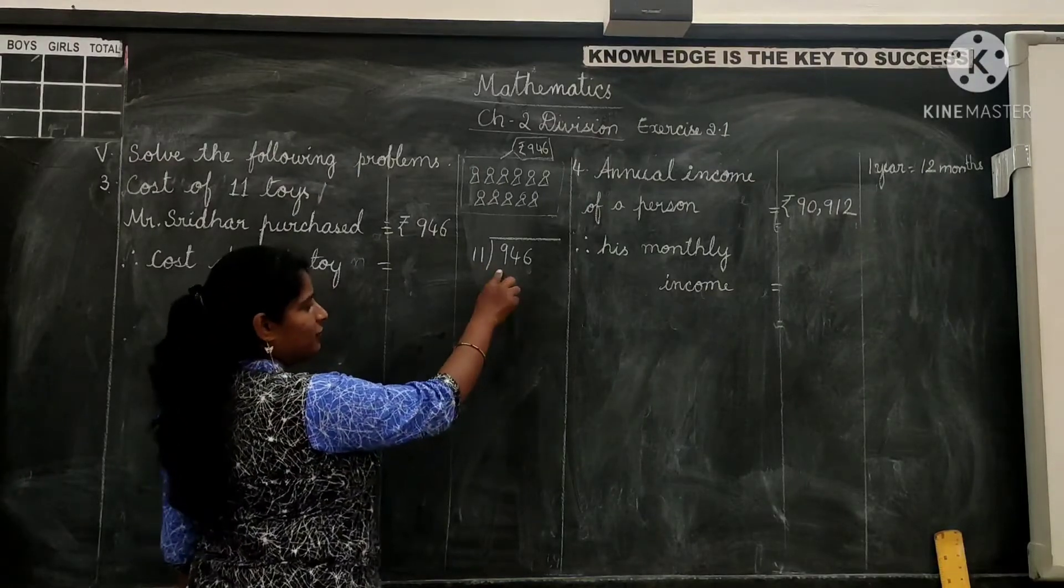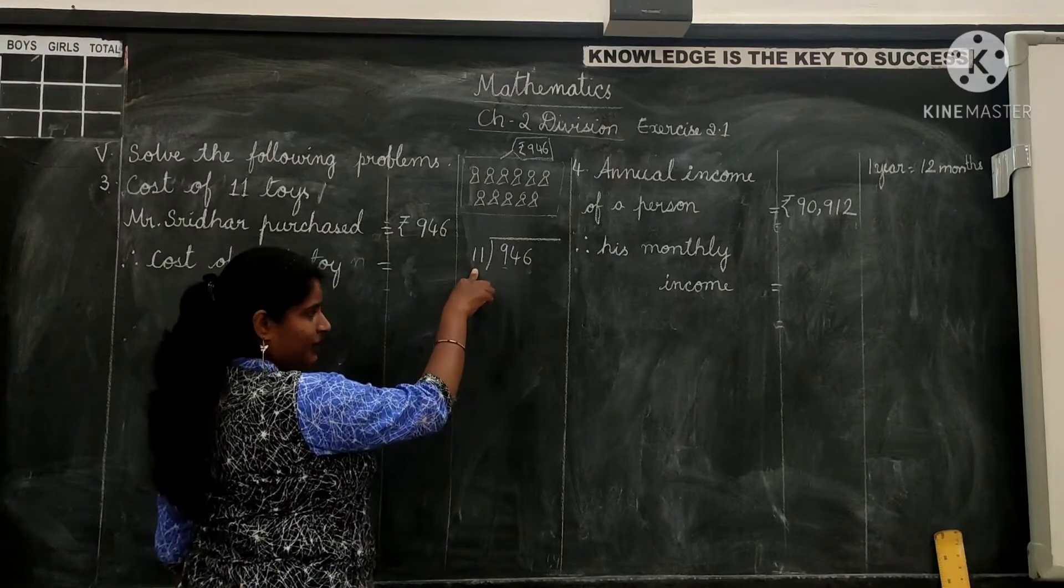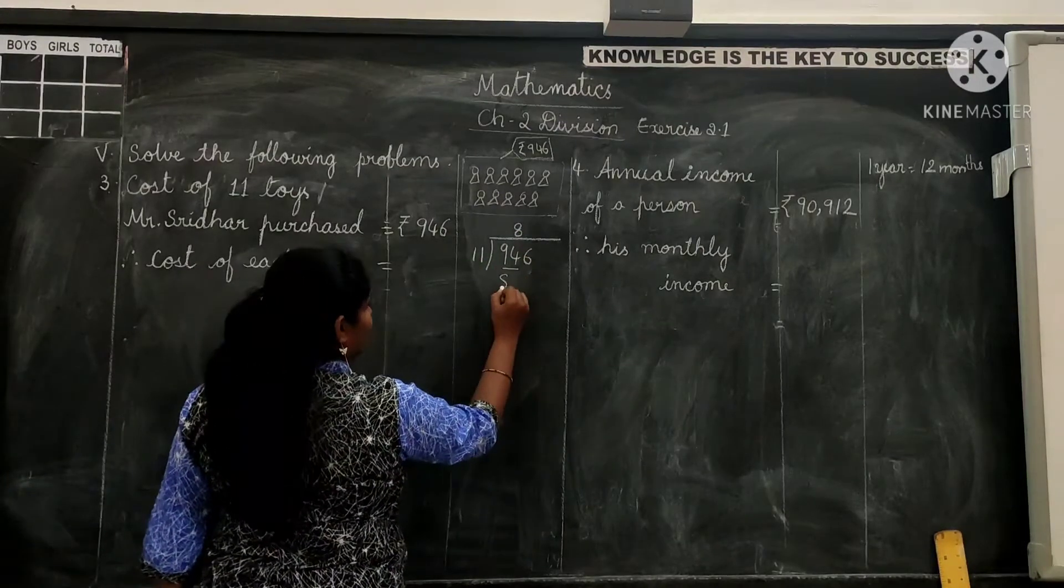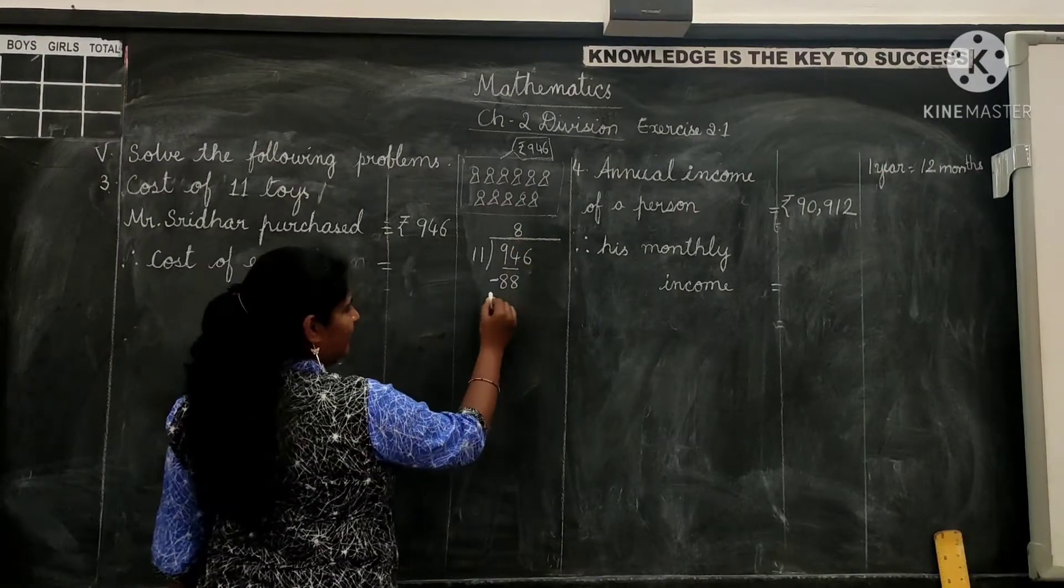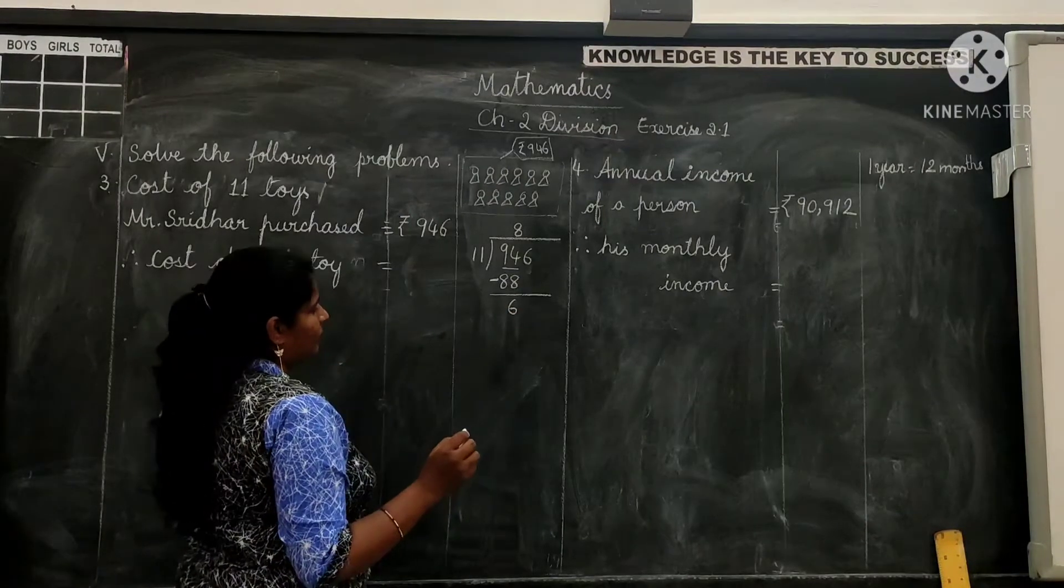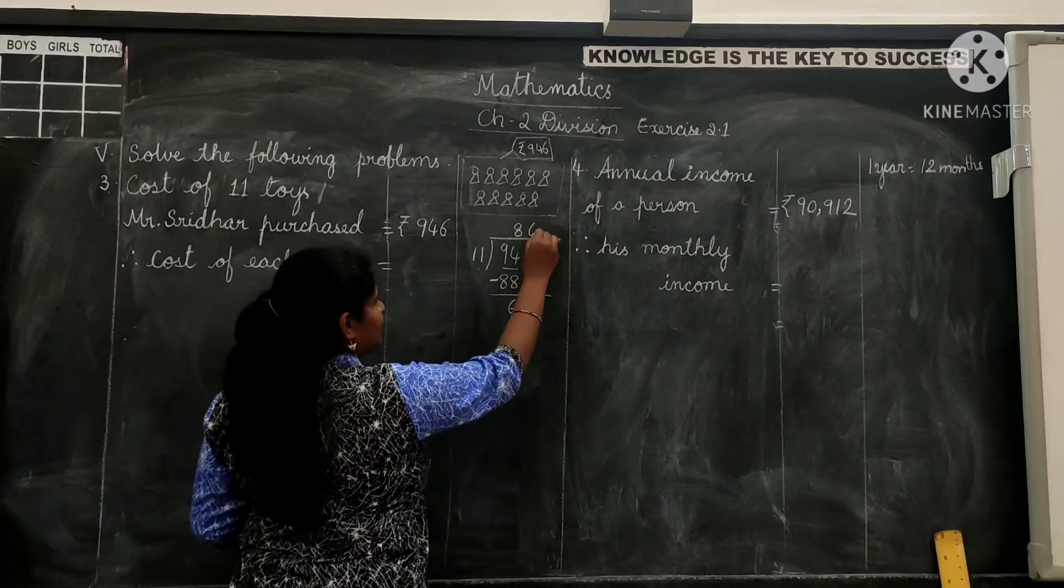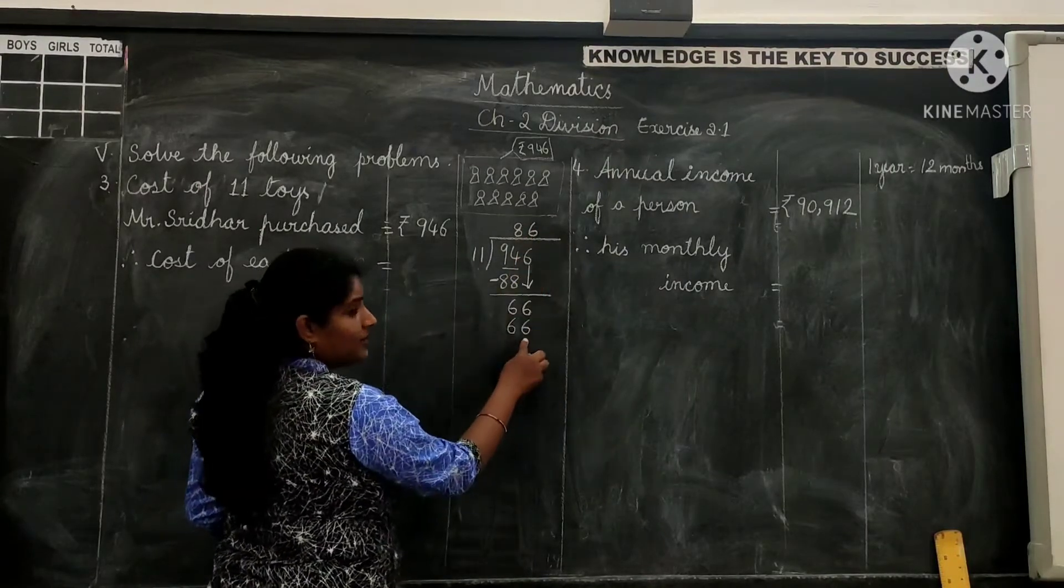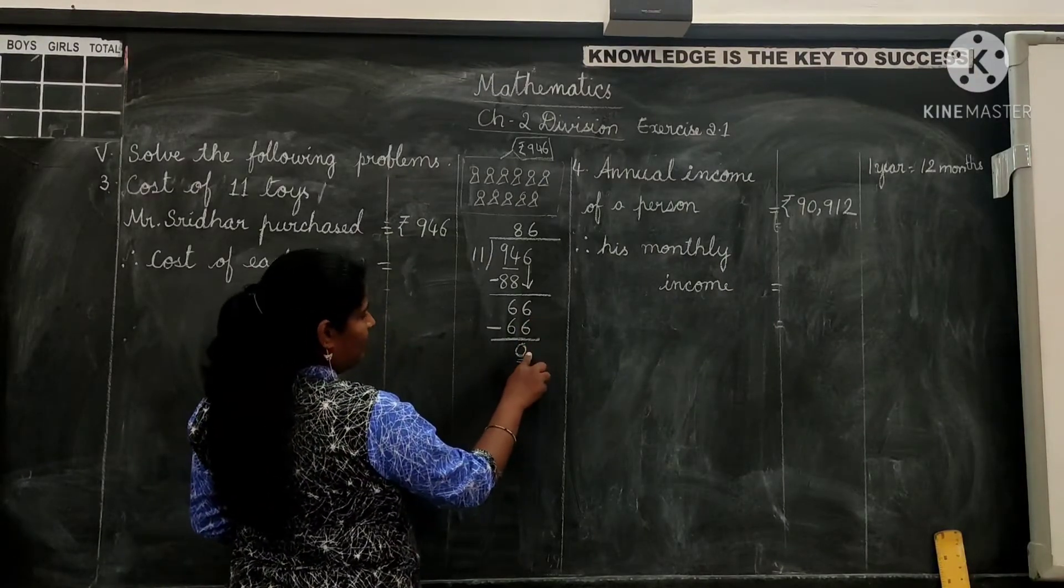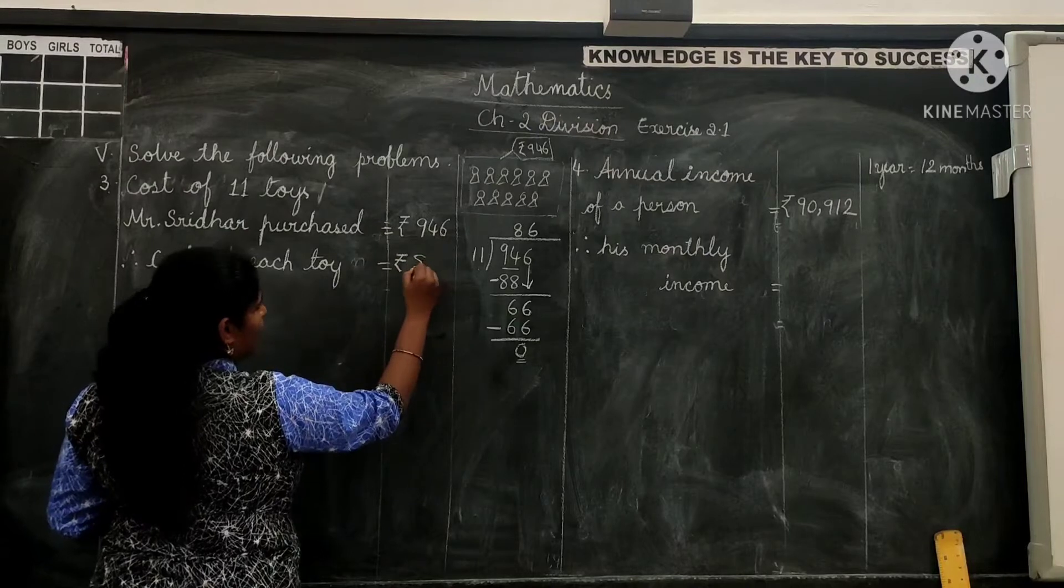So when we divide 946 by 11, we will get the cost of each toy. Start division from the highest place of the dividend, hundreds. We have 9 in hundreds place which is less than 11, cannot be divided. So take another digit, make it 94. 11 eight times are 88. 8 in quotient's place, 88 under the dividend. Subtract 88 from 94 and that gives you 6. Next number now, that is 6, this becomes 66. So 11 six times gives us 66. 6 in quotient's place, 66 under the dividend. Now subtract 66 from 66, so 0. So 86 in quotient is nothing but the cost of each toy. Since it is cost, we have to write the rupees symbol.